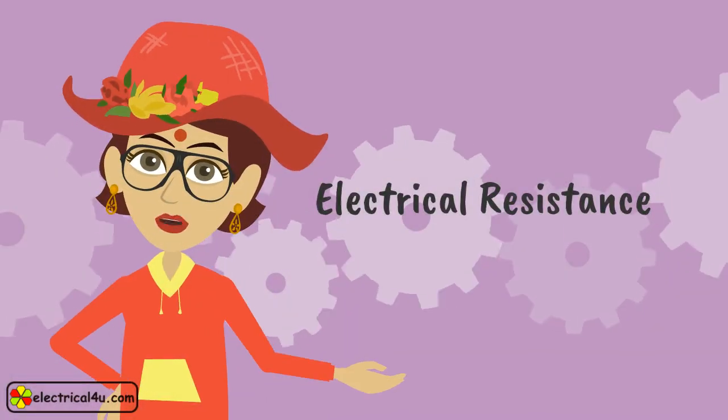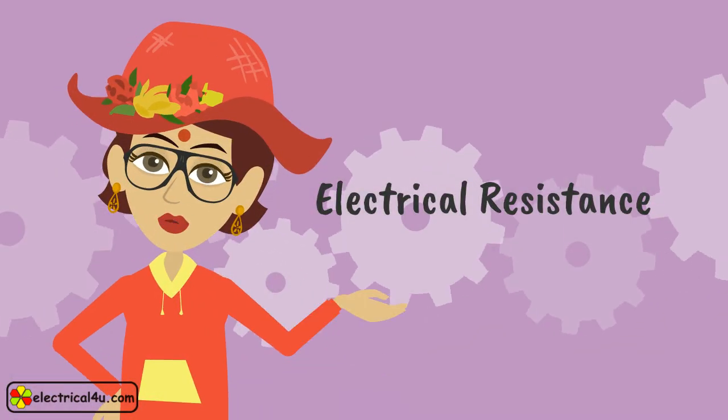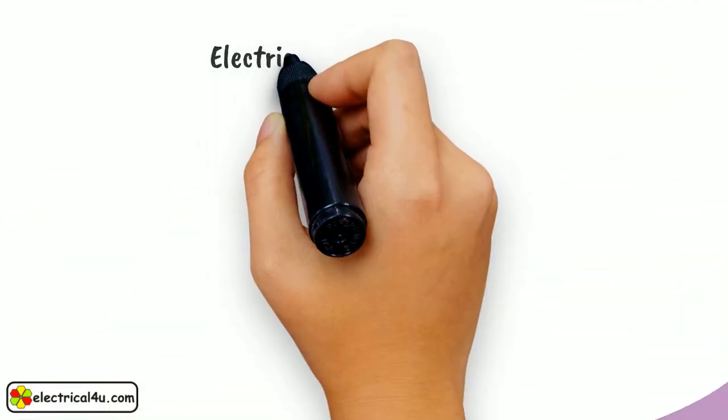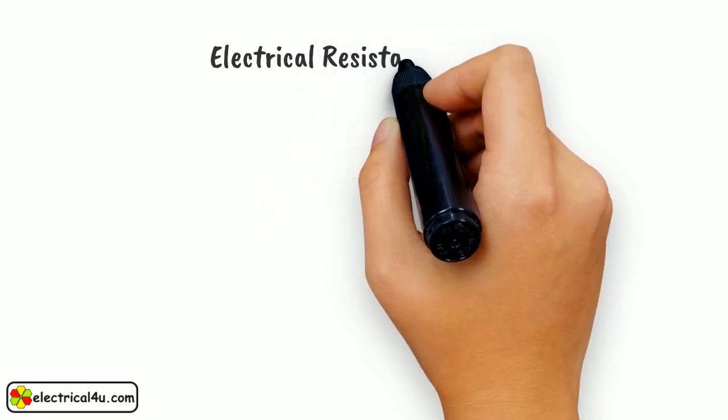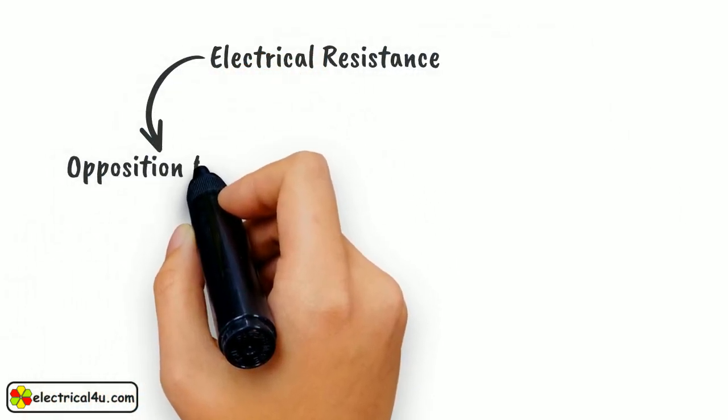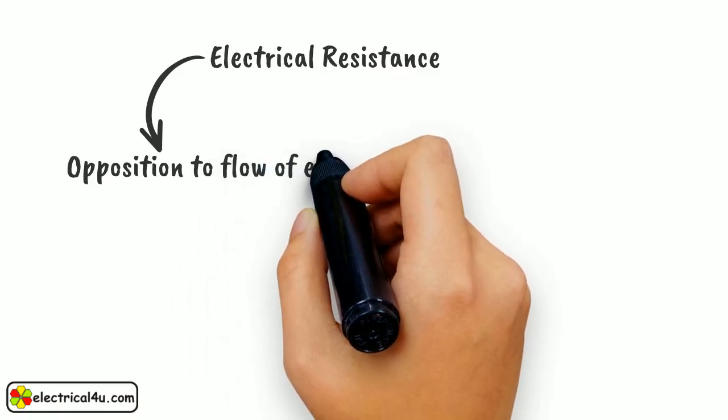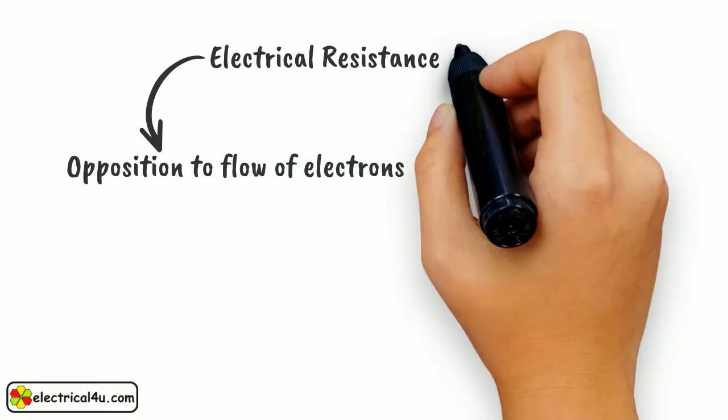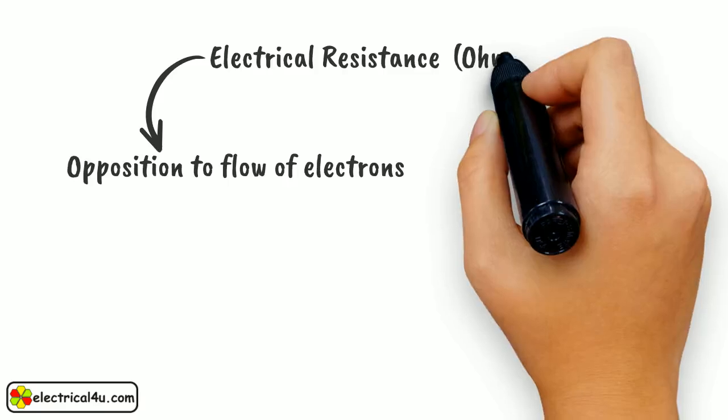Let's discuss the basic concept of electrical resistance. Electrical resistance is the opposition to the flow of electrons in a given material. It is measured in a unit called Ohm.